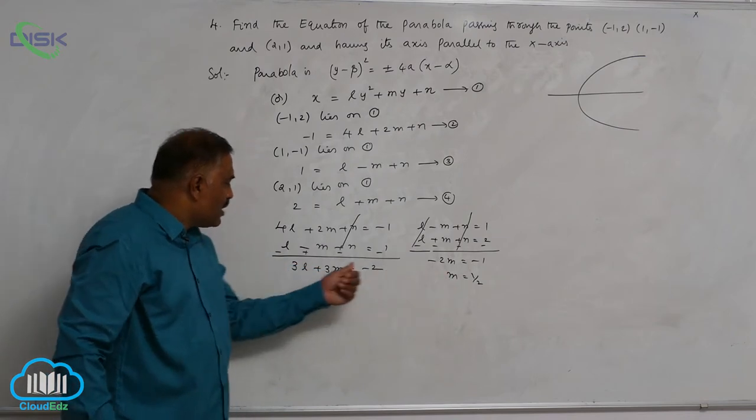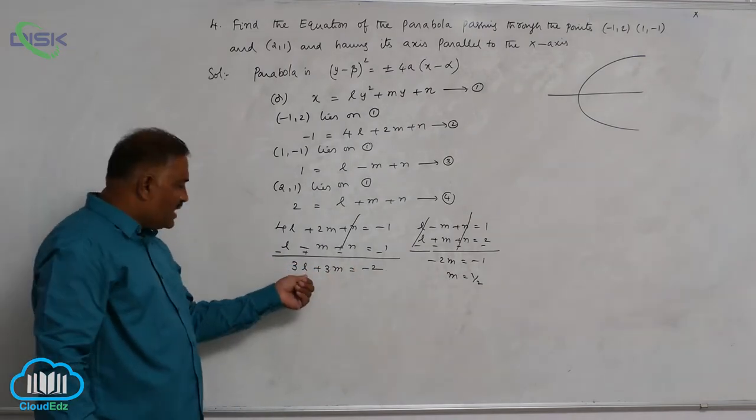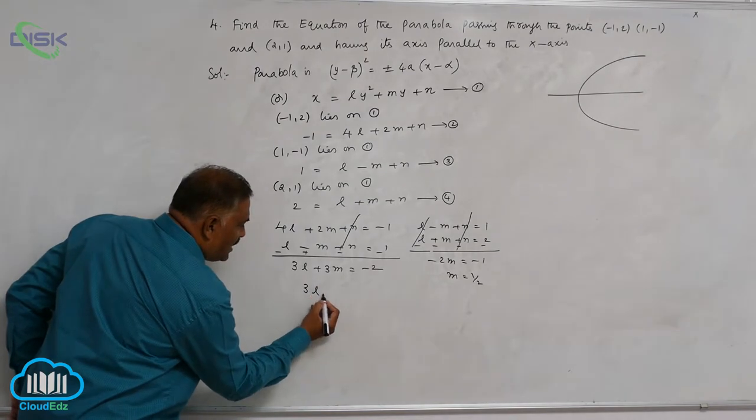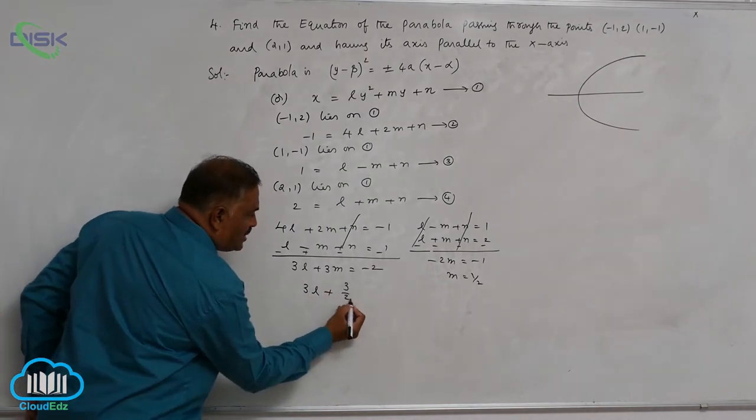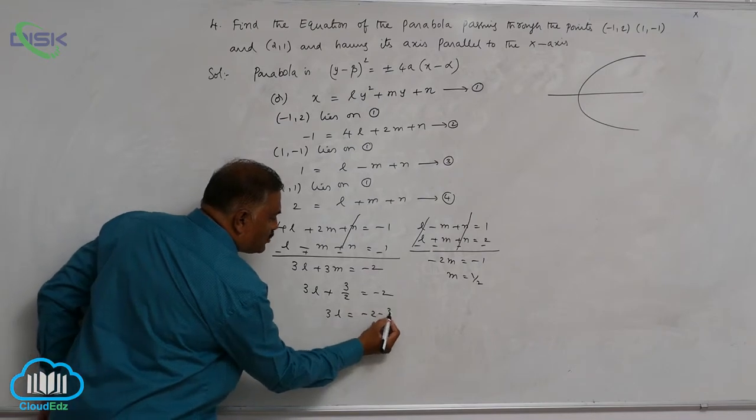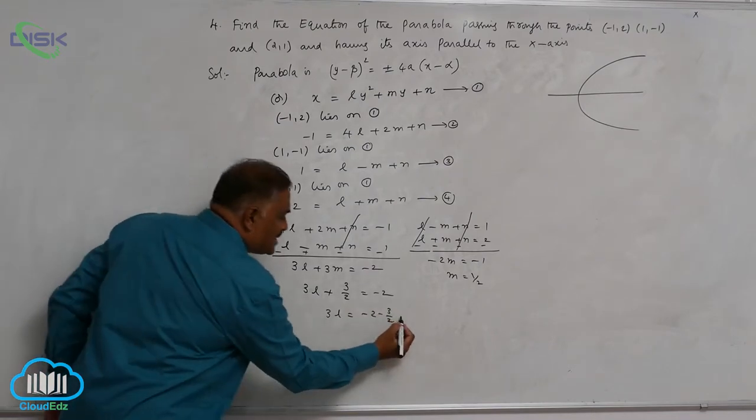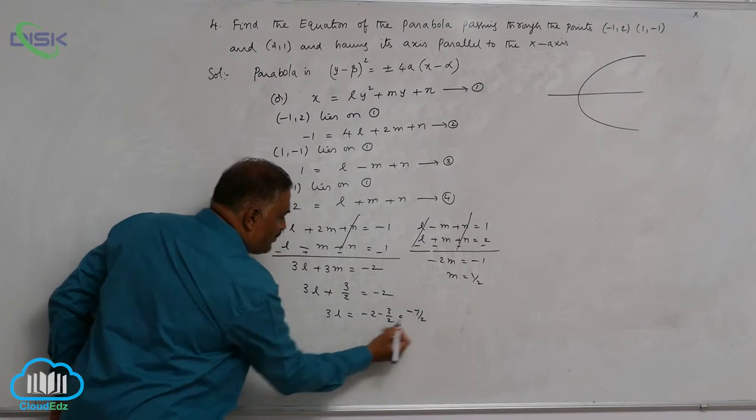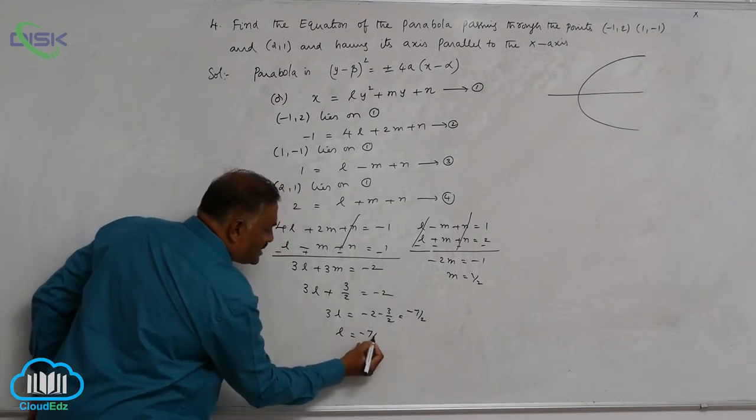Substituting m equal to 1/2 in this equation, you will get l value. So 3l + 3/2 = -2. 3l = -2 - 3/2. This is -7/2. So l = -7/6.